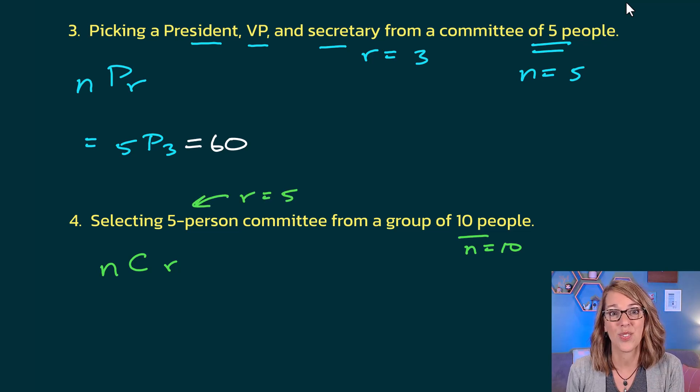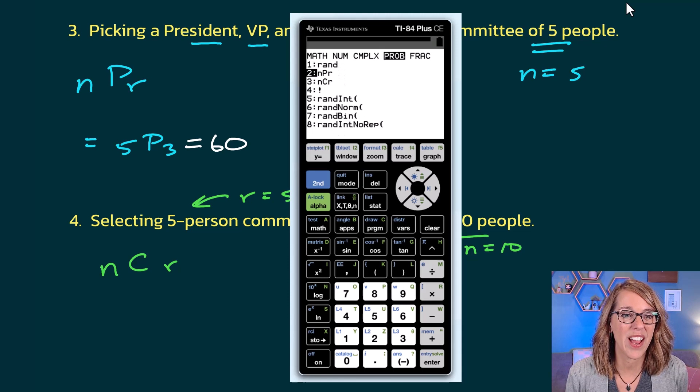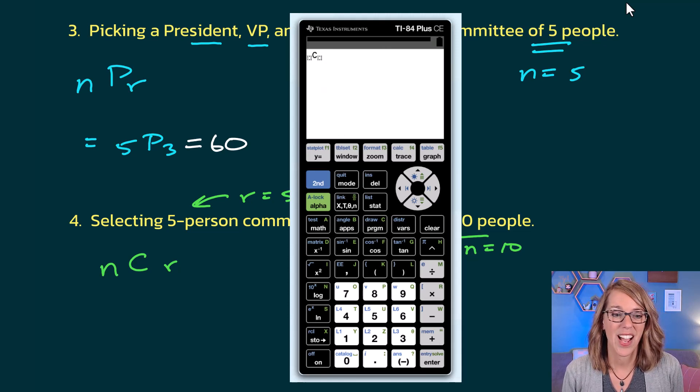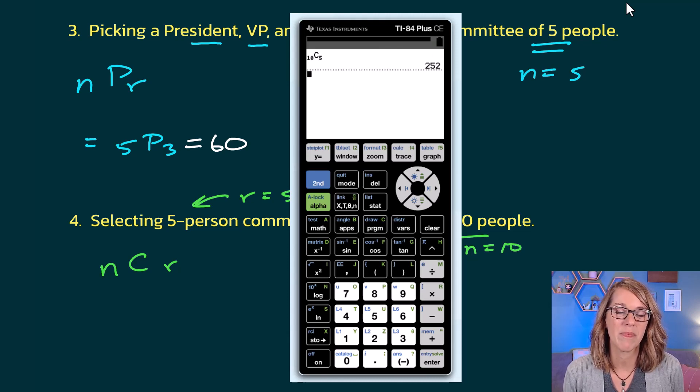Again, let's put this right into our calculator. Math menu, over to probability, arrow down to the combination, hit enter. I'm going to put 10 in first. That's the number that I'm choosing from, and I'm going to choose 5 to be on that committee, and I end up with 252.